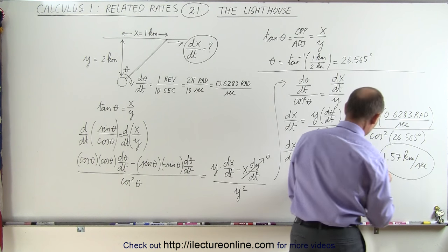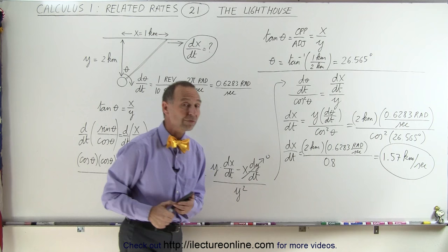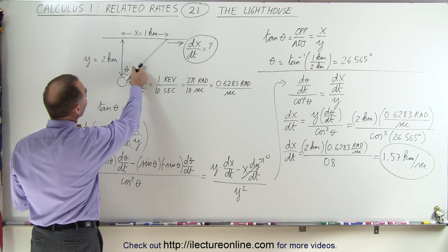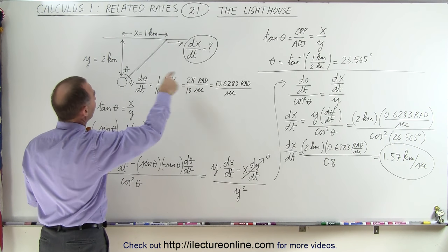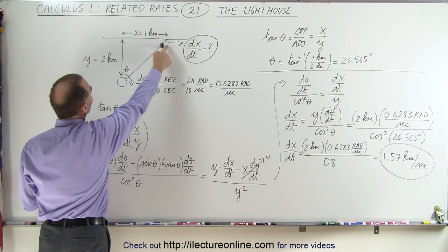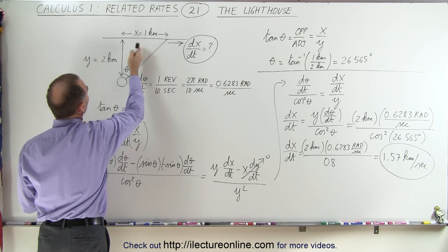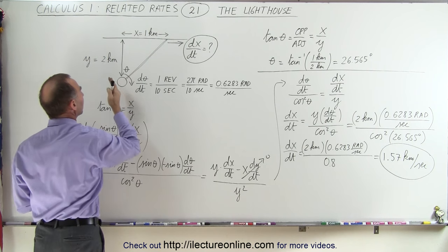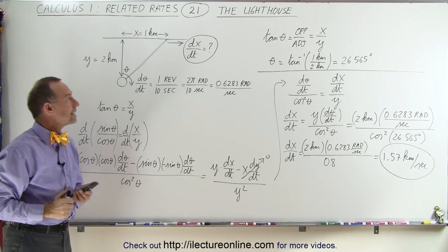So the beam will be moving along the shoreline at a rate of 1.57 kilometers per second when it's making an angle of 26.565 degrees, when the beam is hitting the shoreline one kilometer to the right of the point directly across from the lighthouse.